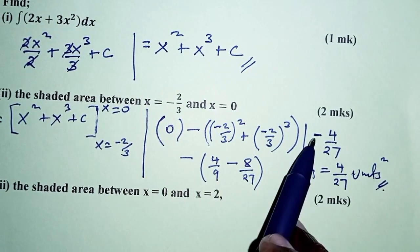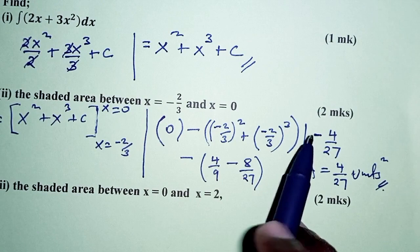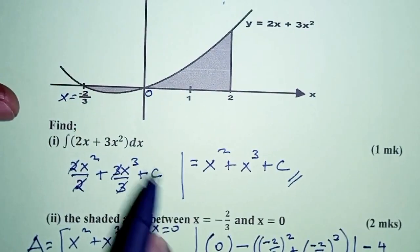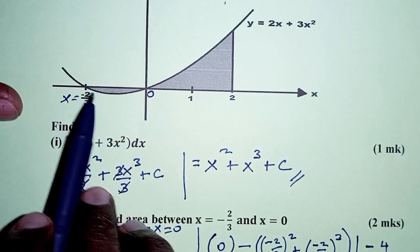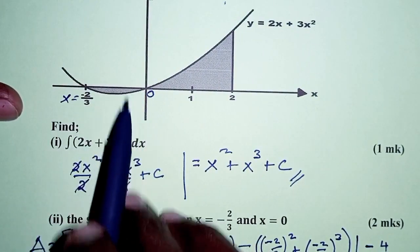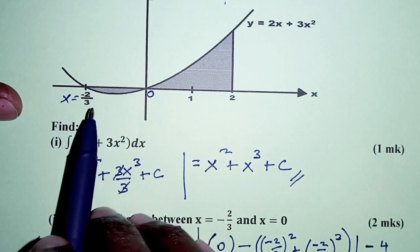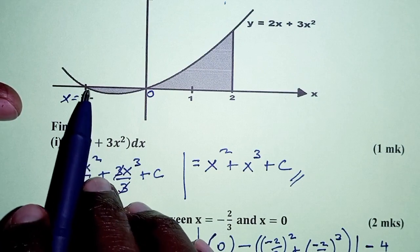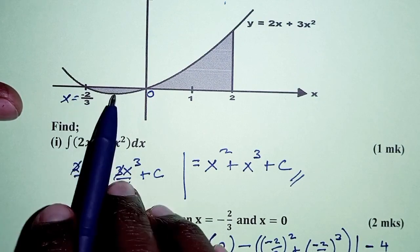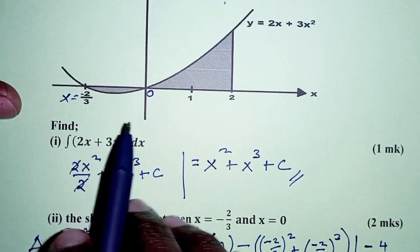The negative sign indicates that this area lies in the lower region of the Cartesian plane — it is considered negative simply because of its direction below the x-axis.